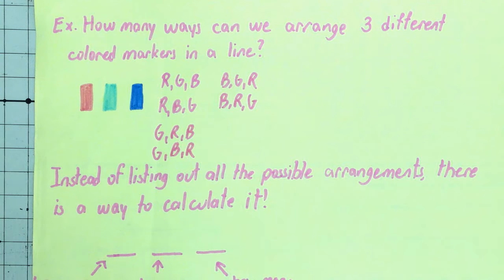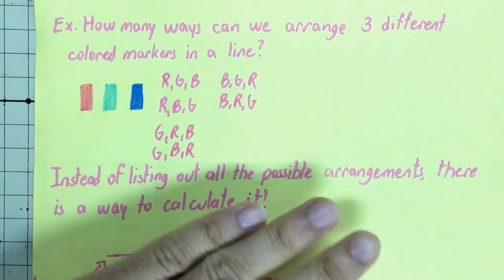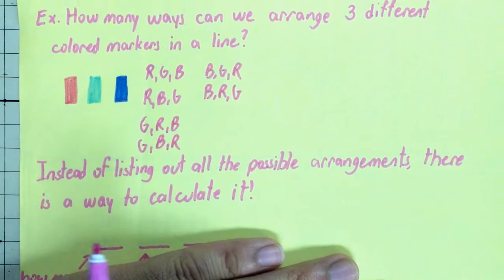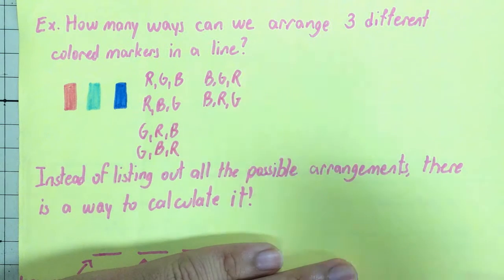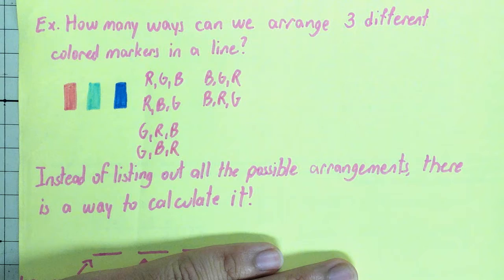So there's only six possible ways to arrange this. Now, instead of listing out all the possible arrangements, there is a way to calculate it.